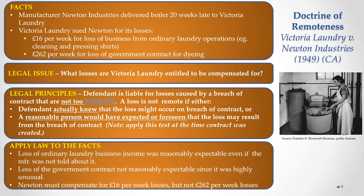Applying those legal principles to the facts, the court concluded that the loss of ordinary laundry business income of £16 per week was reasonably expectable even if the manufacturer was not told about it, so Victoria Laundry would be compensated for that. However, the loss of the government contract at £262 per week was not reasonably expectable since it was highly unusual. Therefore the court ordered Newton to compensate Victoria Laundry for the £16 per week losses, but not for the £262 per week losses arising from the loss of that government contract.